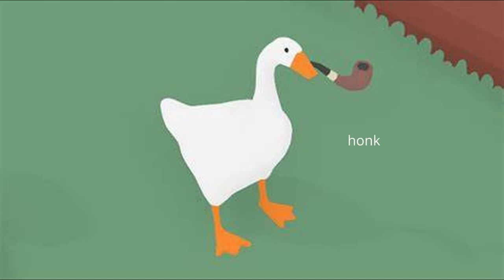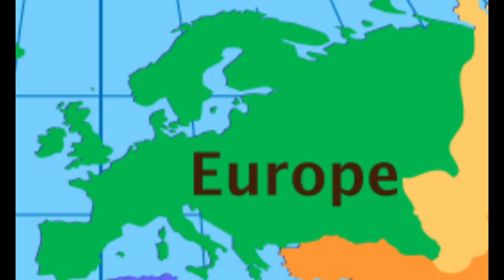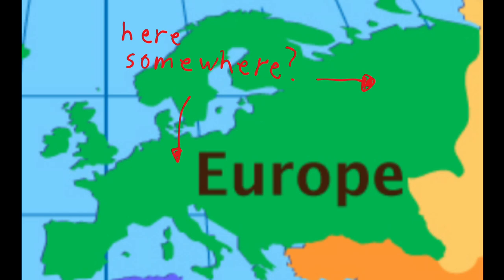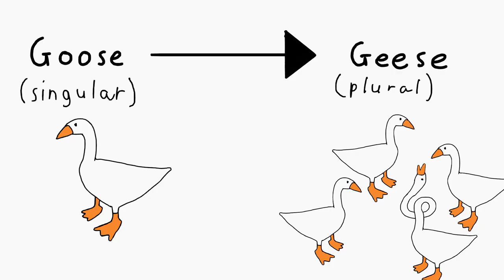Let's start off with the names. As with most animal names, the name goose stems from European origins, or wherever Germany and Dutch land are. I'm American, I don't know geography. Anyways, the plural for goose is geese.